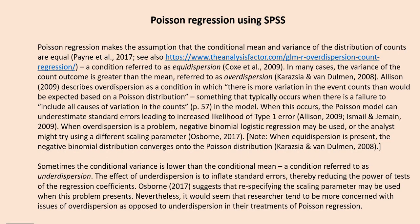Now, Poisson regression makes the assumption that the conditional mean and variance of the distribution of counts are equal, a condition referred to as equidispersion. In many cases, the variance of a count outcome is greater than the mean, and this is referred to as overdispersion.